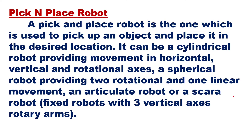It can be a cylindrical robot providing movement in horizontal, vertical, and rotational axes. It can be a spherical robot providing two rotational and one linear movement. It can be an articulate robot or a SCARA robot, which is a fixed robot with three vertical axis rotary arms. Depending on your application — how many arms, what movements, where to pick and place — your application will decide what kind of structure your robot needs.